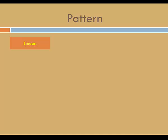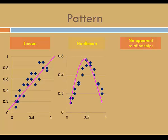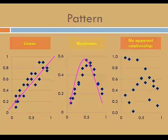Now let's consider pattern. You might see a linear pattern, a non-linear pattern, or no pattern at all, in which case we say that there's no apparent relationship. If the pattern is linear, then all the markers in the scatter plot will fall on or near a straight line. If the pattern is non-linear, then all the markers in the scatter plot will fall on or near some other shape. In this example, it looks like the markers fall on or near a parabola. On the other hand, if there's no apparent relationship, then the markers don't seem to follow any pattern at all.